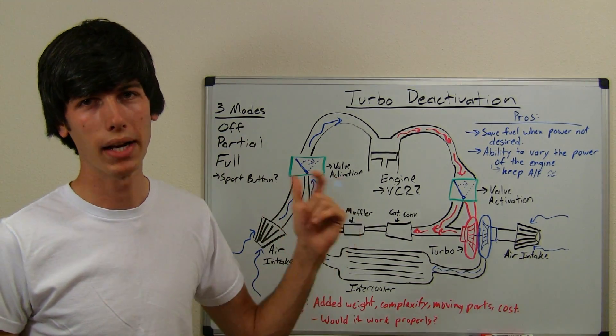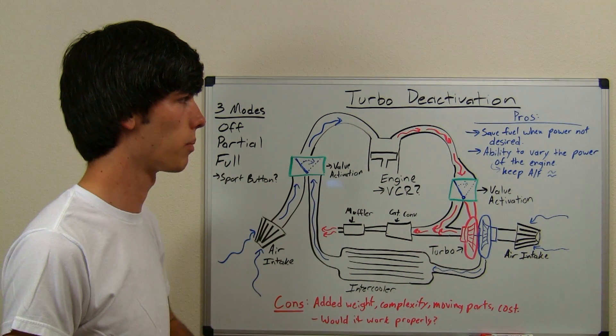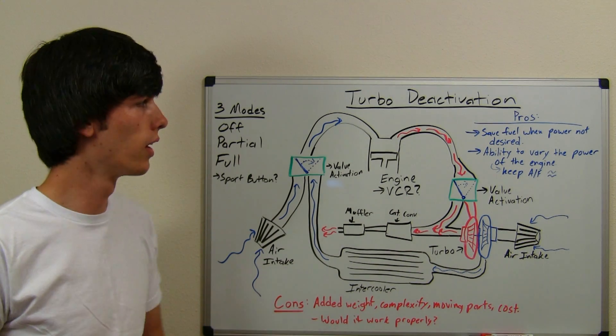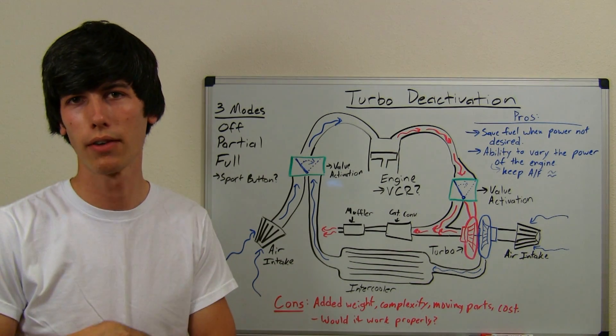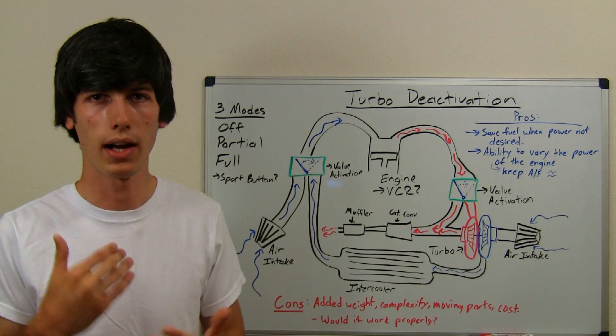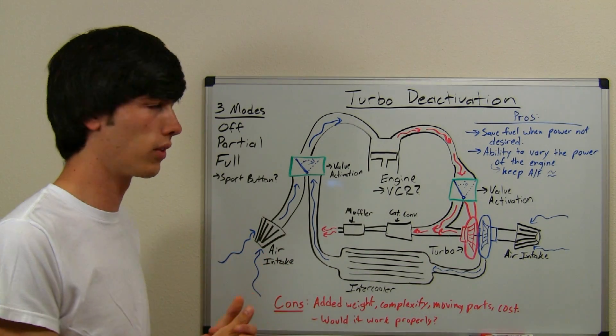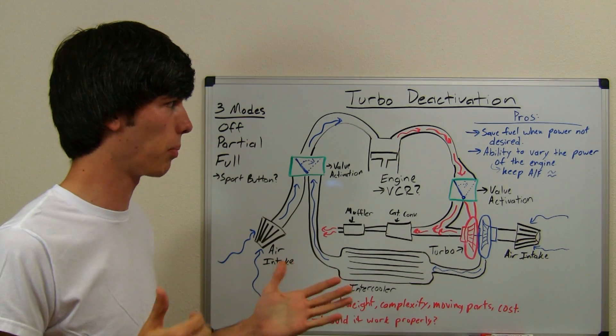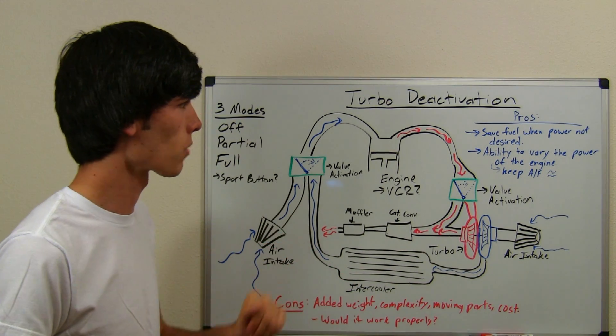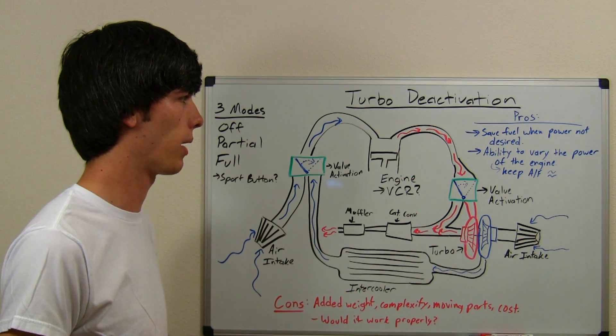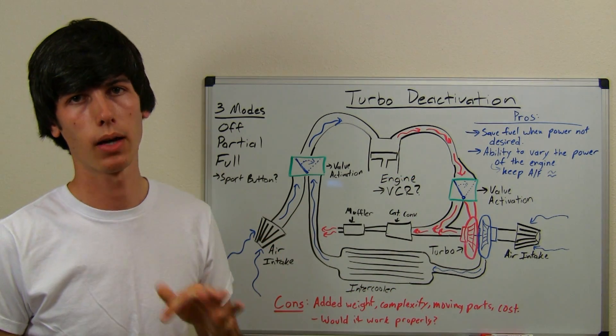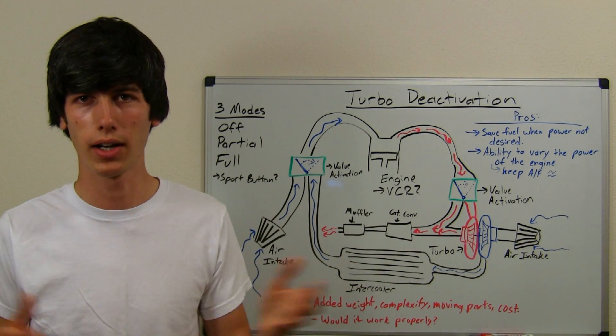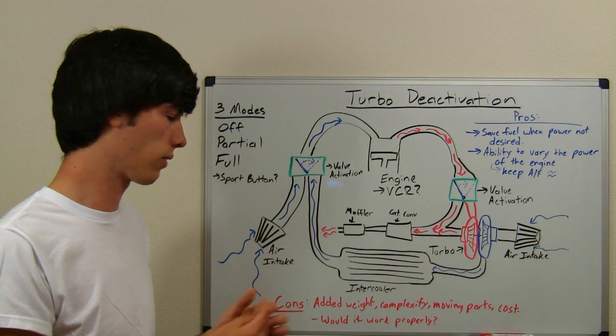So the benefits of this design - save fuel when power is not desired. If you're just driving around the city, you don't need that extra power. Turn off your turbocharger and just drive your car like normal. The idea being that with a higher compression ratio and without using that extra forced-in air, you can save fuel. I'm not really positive if that would occur, but that's the idea. Also, the ability to vary the power of the engine while keeping the air-fuel ratio relatively the same. That's a good thing - you can use your car on the track, off the track, for different reasons.